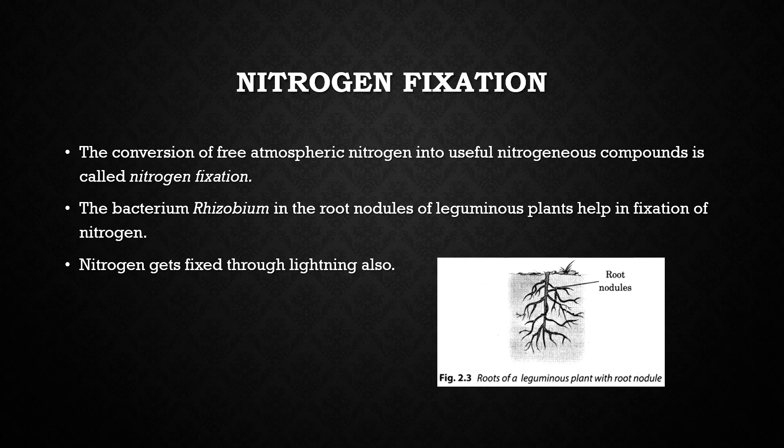When lightning takes place in the sky during a thunderstorm, a high temperature is produced in the atmosphere. At this high temperature, nitrogen gas of air combines with oxygen gas of air to form nitrogenous compounds. These nitrogen compounds dissolve in rainwater, fall to the earth with rainwater and go into the soil.